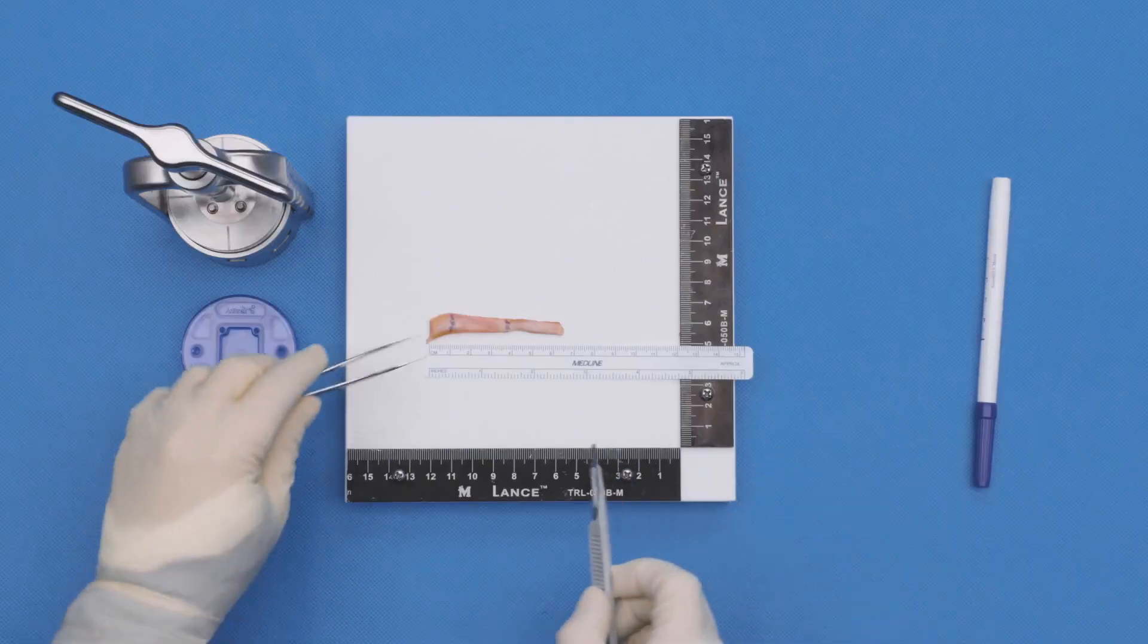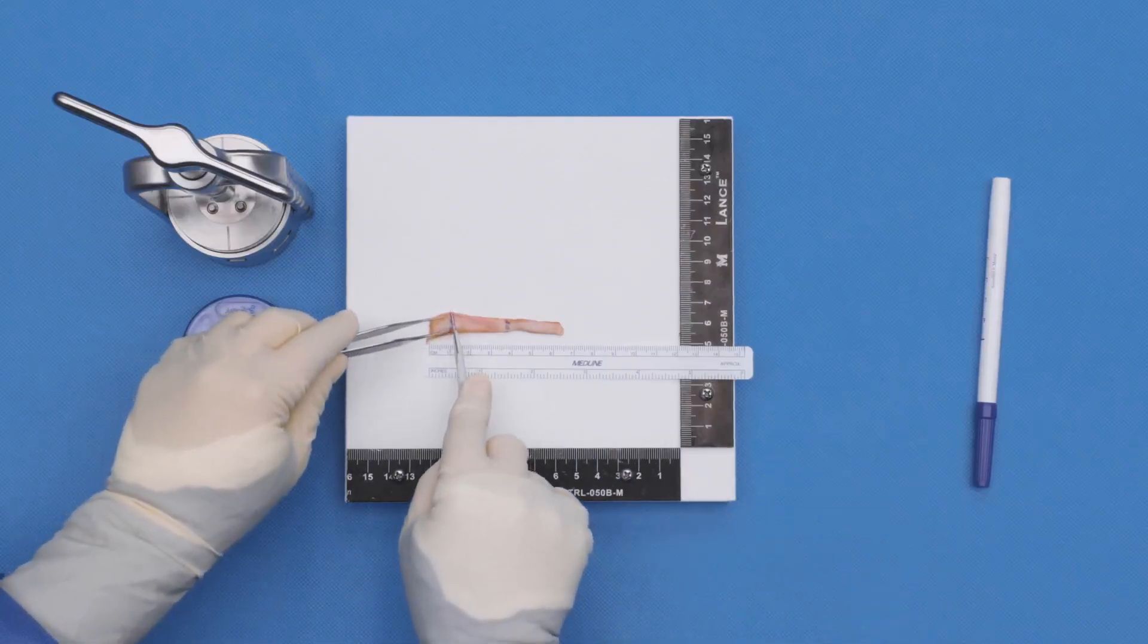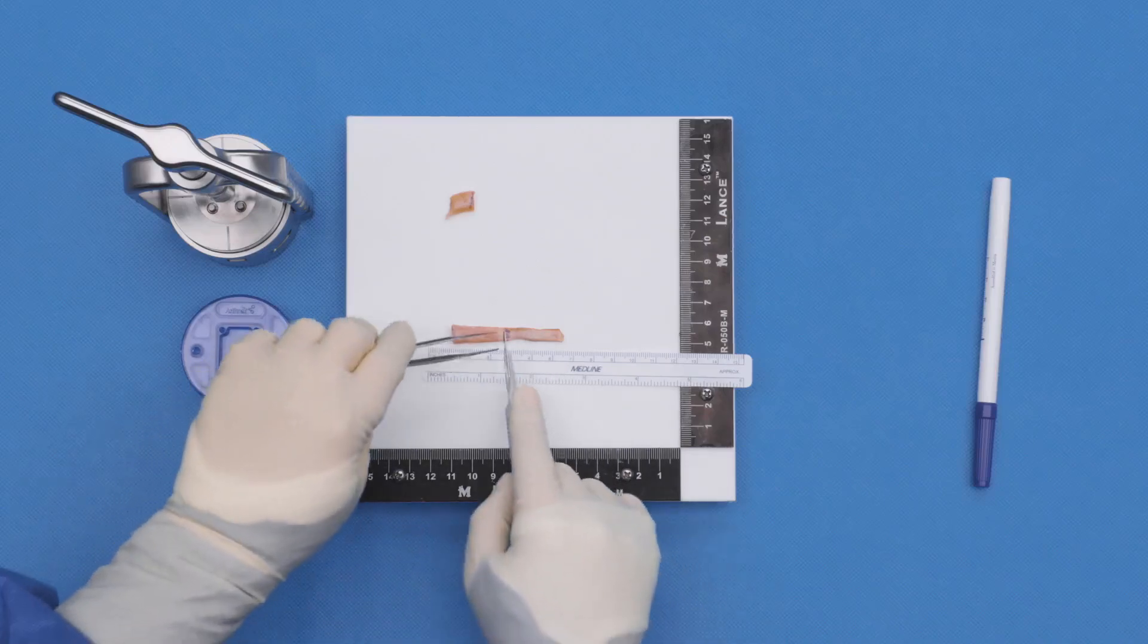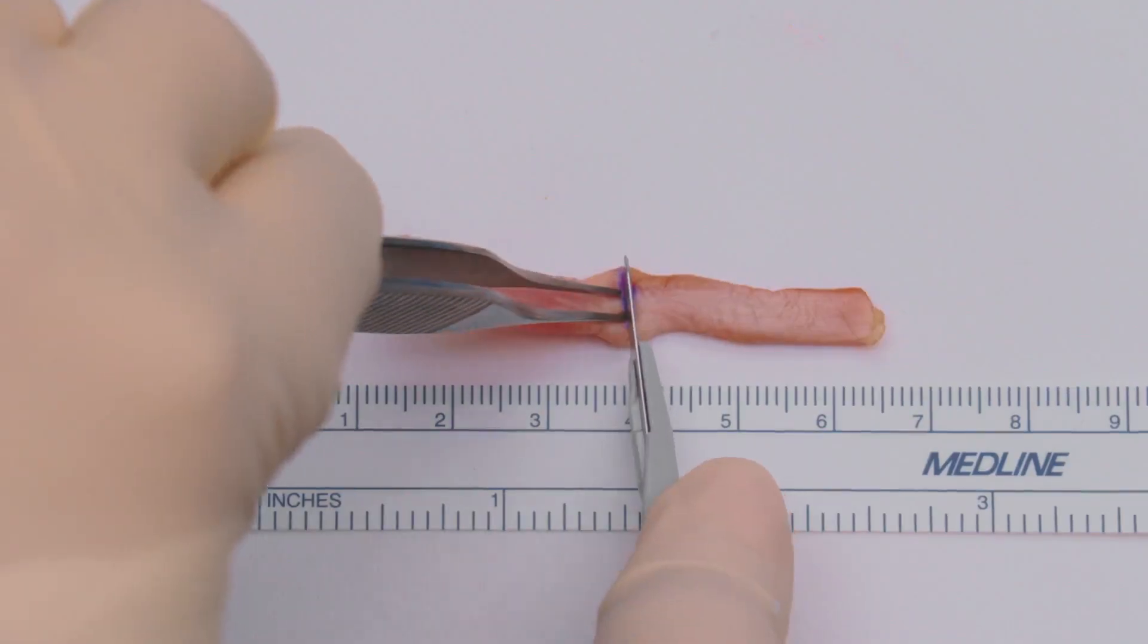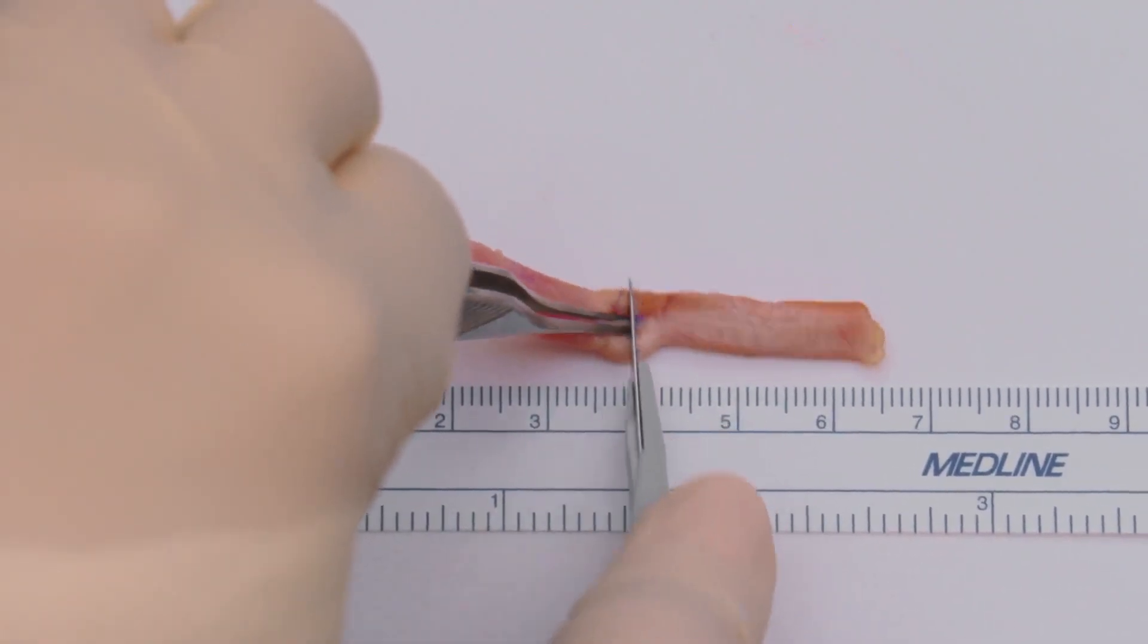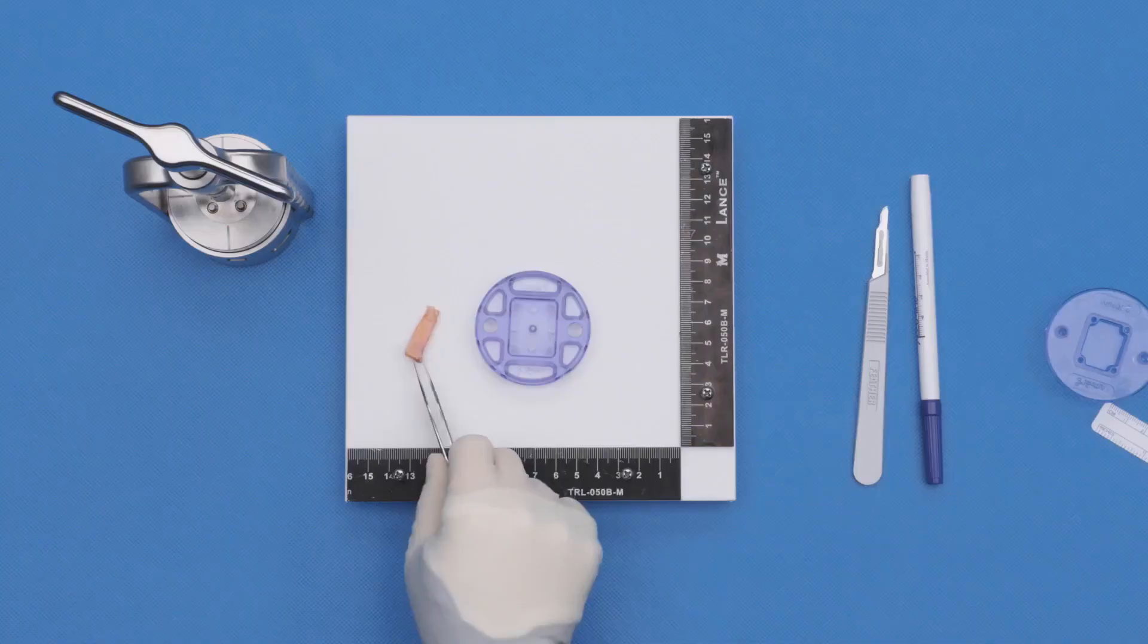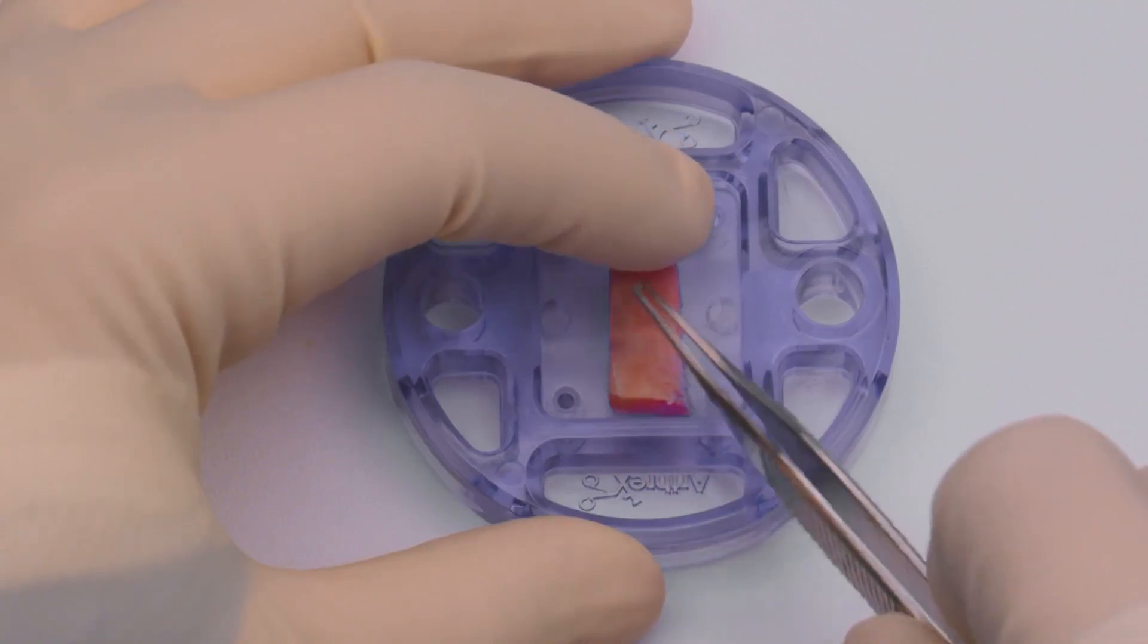Once the graft is harvested, remove and discard approximately 1 cm from the labral attachment point, since the tissue in that region tends to not smash well. Then cut the graft to 27 mm in length. The cut tendon can then be placed into the bottom well of the compression plates.